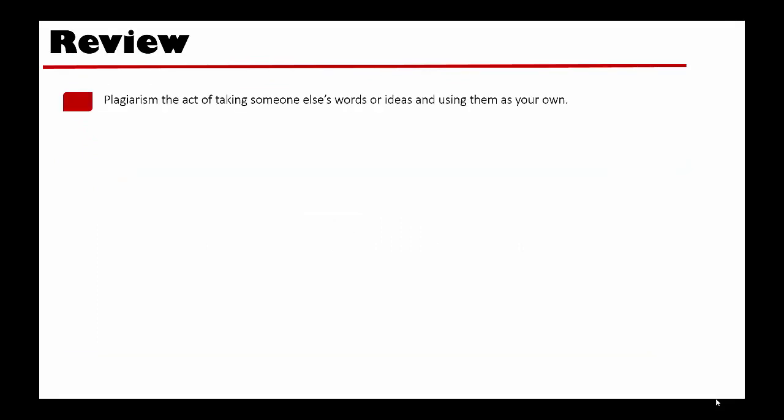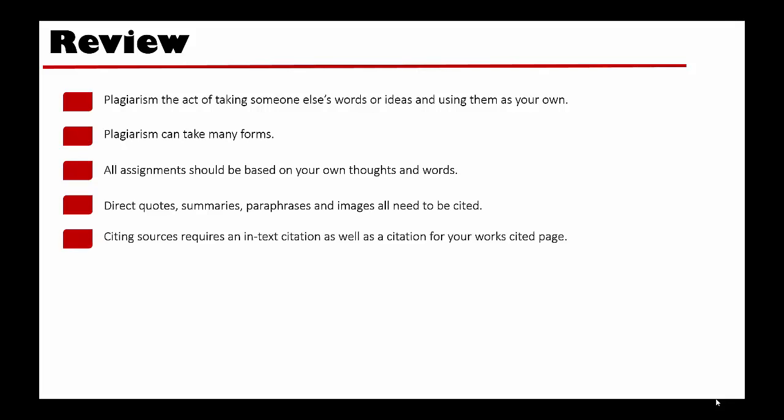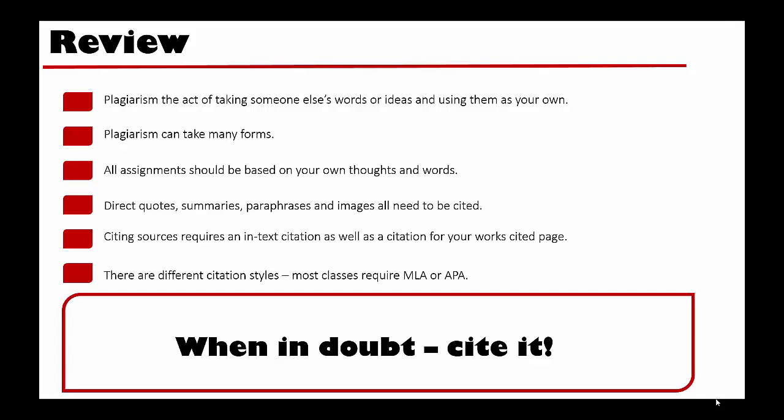Let's review. Plagiarism is the act of taking someone else's words or ideas and using them as your own. There are many types of plagiarism, ranging from handing in a whole assignment that doesn't belong to you to simply forgetting part of a citation. To avoid plagiarism, you should base any assignment on your own thoughts and ideas and use outside sources to support them. Direct quotes, summaries, paraphrases, and images all need to be cited. To properly cite a source, you need a citation and a parenthetical citation. There are different citation styles — most classes will require MLA or APA style. And lastly, when in doubt, cite it.